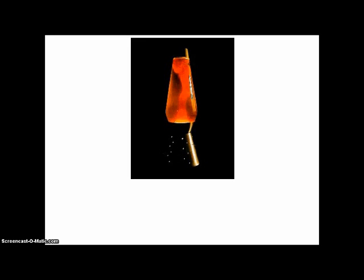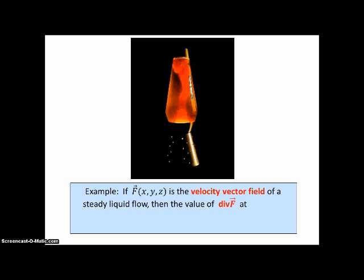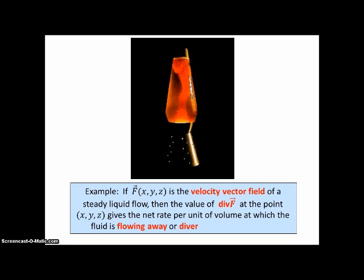For example, if you've ever seen a lava lamp, the liquid movement could be modeled with various vector fields at different times. If the vector-valued function is the velocity vector field of a steady liquid flow, then the value of the divergence of F at point (x, y, z) gives the net rate per unit volume at which the fluid is flowing away from — or diverging from — that point. If the value is negative, the fluid is flowing toward that point.